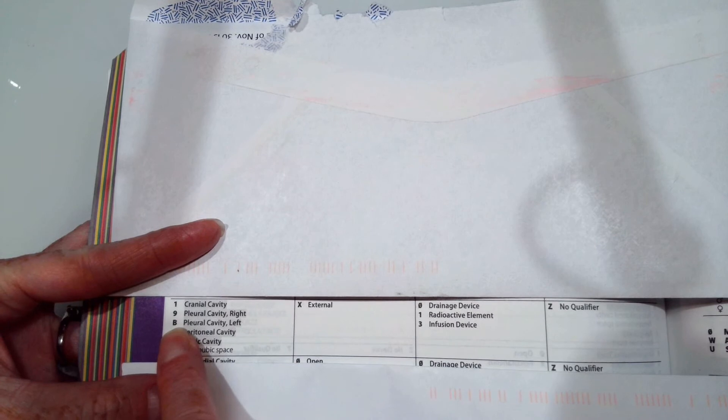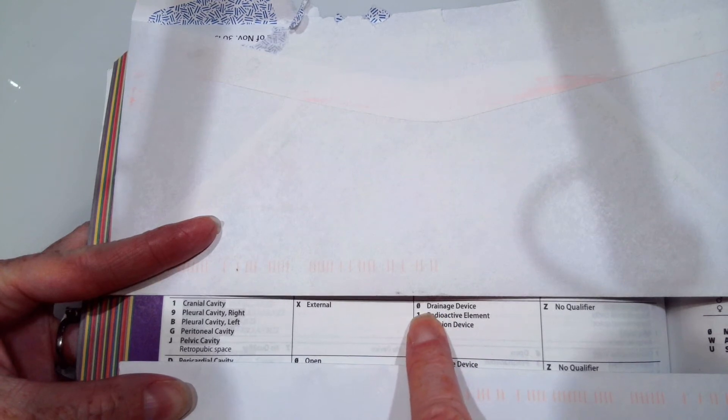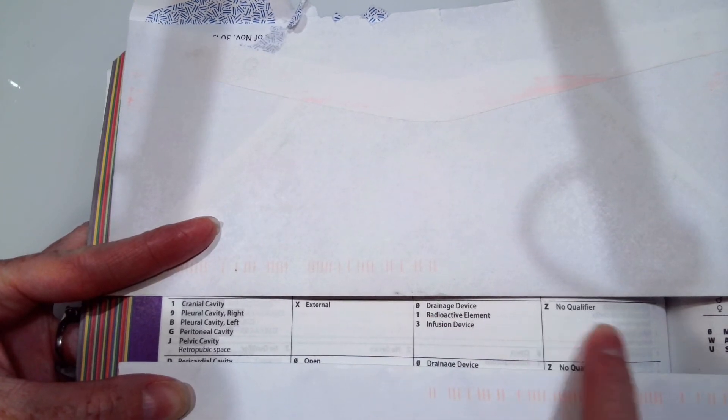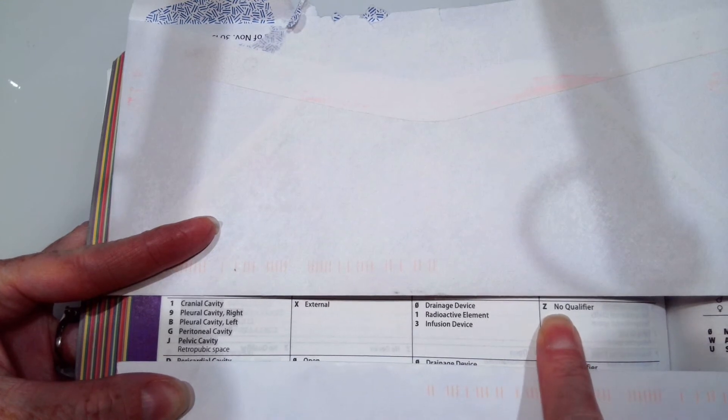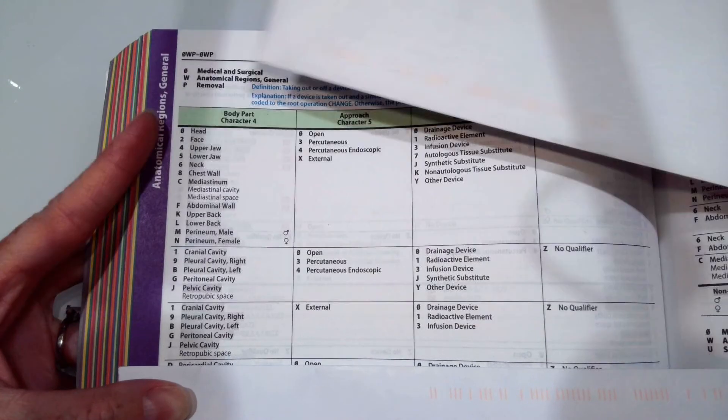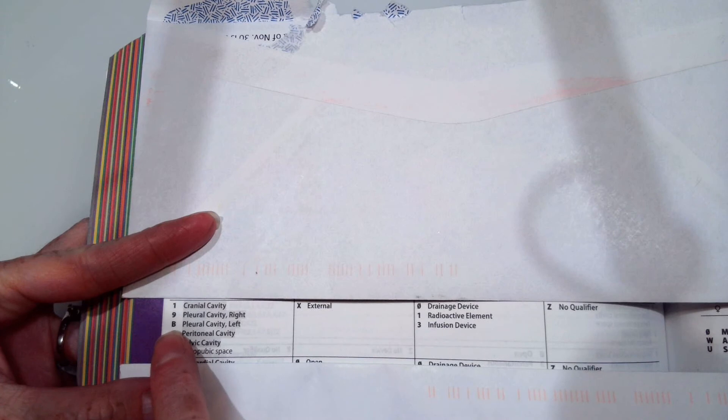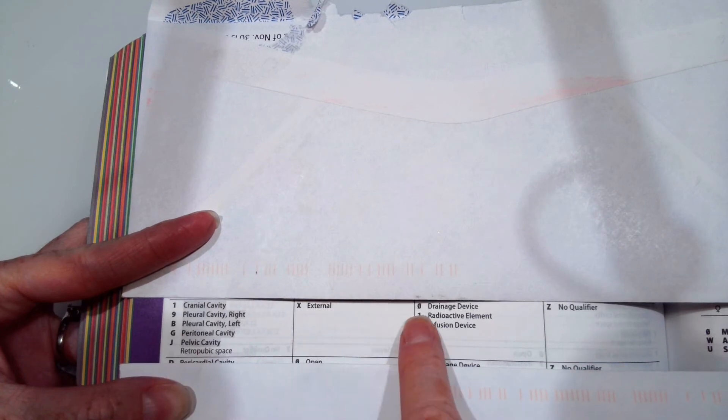Left would be X. A chest tube is a drainage device, so our sixth character would be 0. And our seventh character, no qualifier, is Z. So our code is 0WPBX0Z.